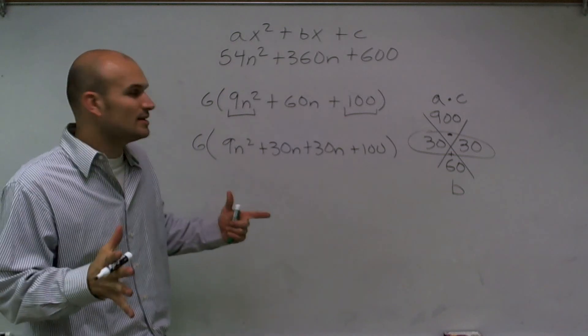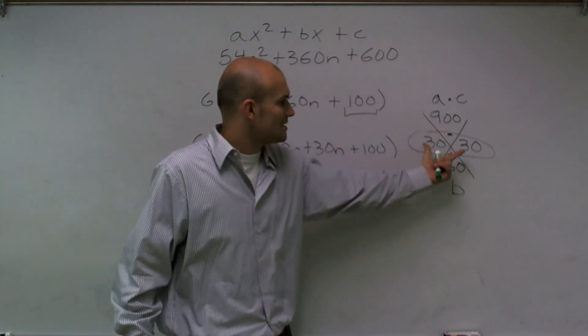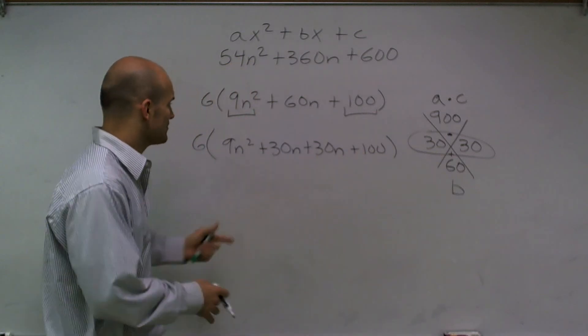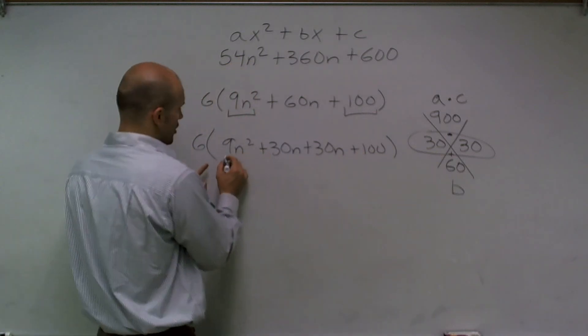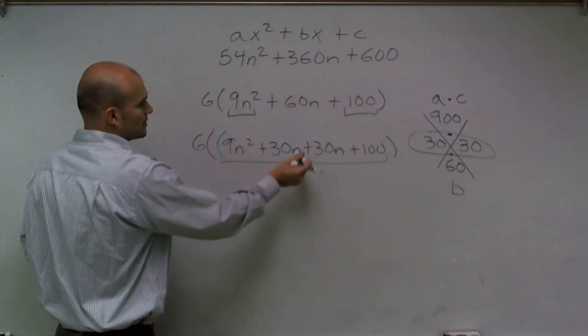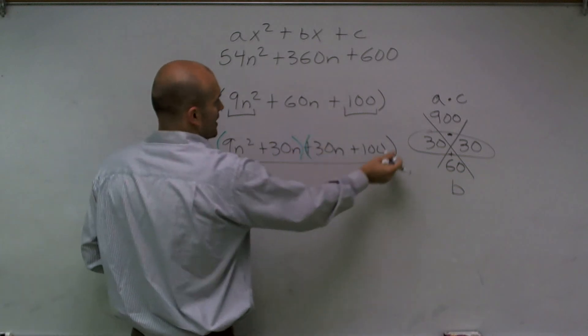Okay, so all I really did was by using this diamond method, I was able to determine what I can rewrite my two middle terms as. Now what I'm going to do is I'm going to factor all of this inside here, I'm going to factor by grouping. So what I'm going to do is I'm going to group the first two terms and then group the last two terms.